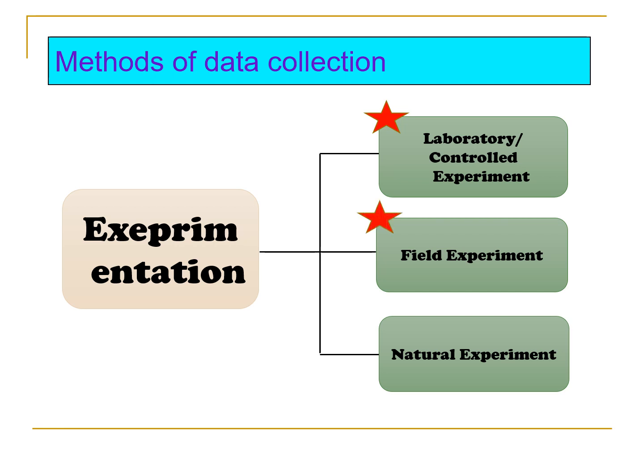The second experimentation is a field experiment. In this method, the researcher manipulates the independent variable but in a real-life setting, meaning the researcher cannot control extraneous variables.